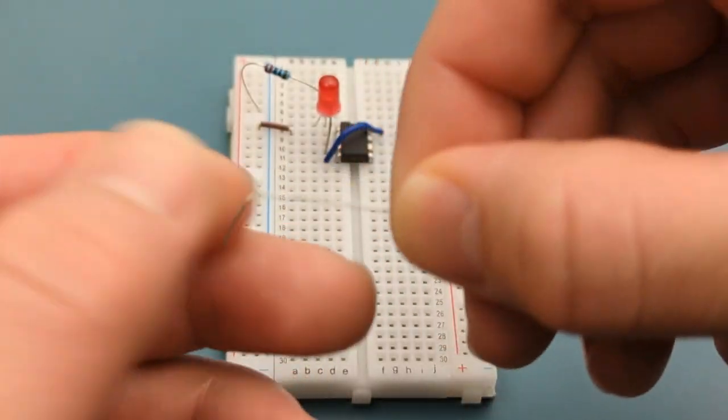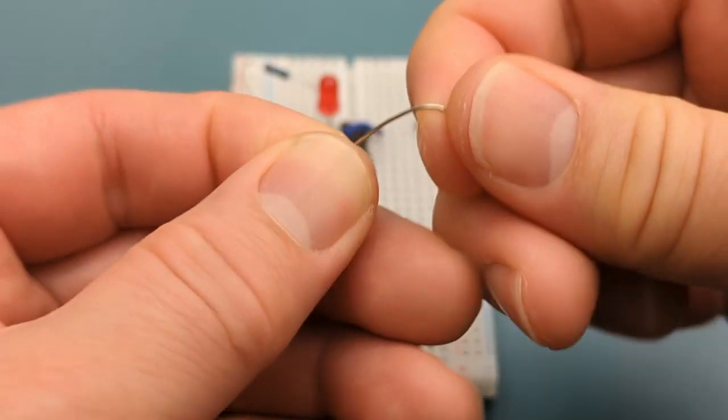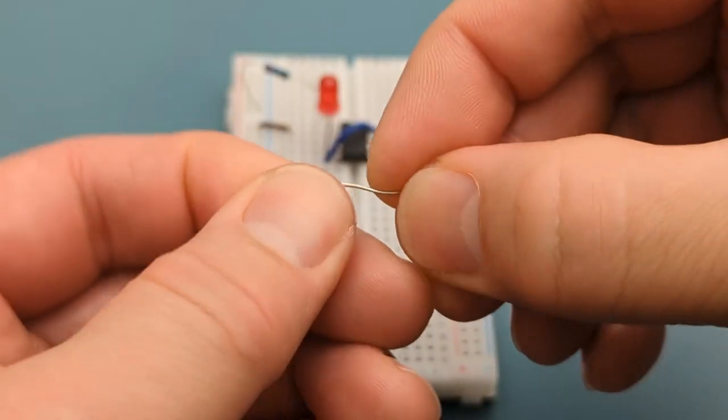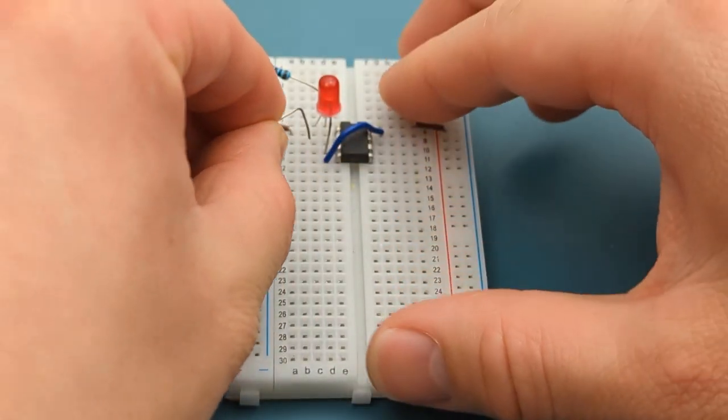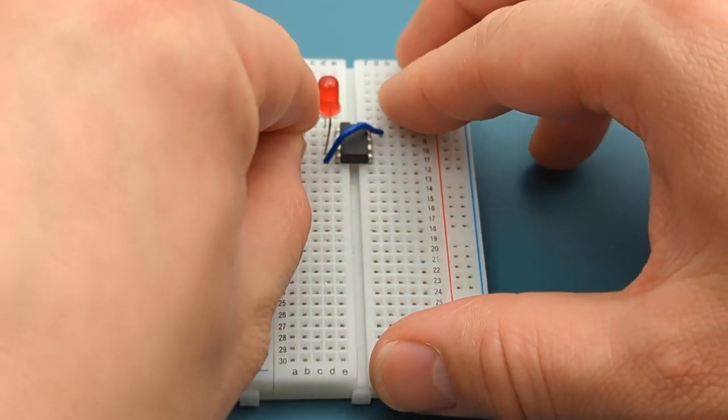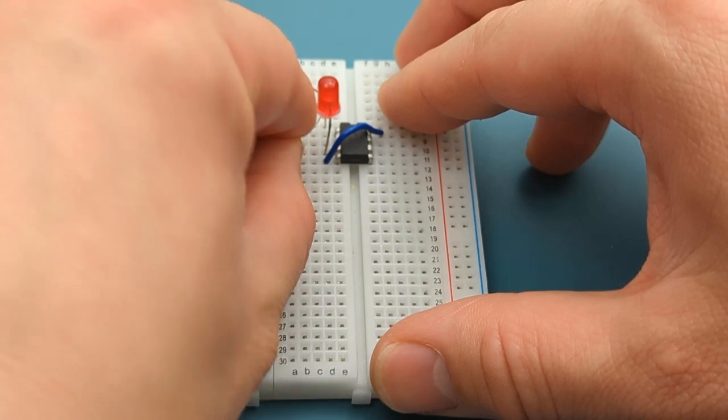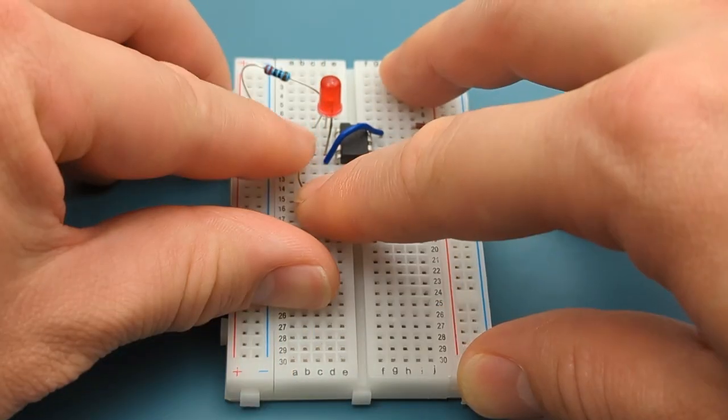Bend the ends of the touch probe. This is a jumper wire without the plastic cover. Insert the touch probe into pin 1 or ground in a few rows below the 555 timer. Straighten the touch probe.